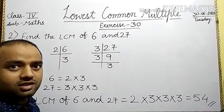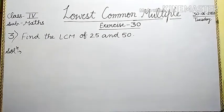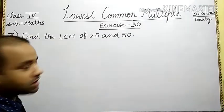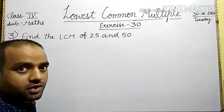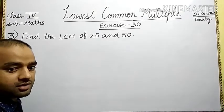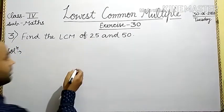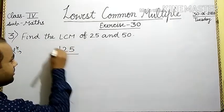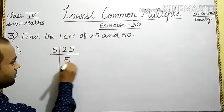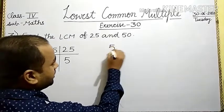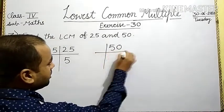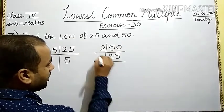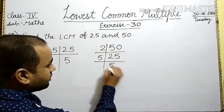Now, let us discuss question number 3. In question number 3, find the LCM of 25 and 50. First, we find the prime factors of 25 and 50. For 25: 5 times 5 gives 25. Next, 50: divide by smallest prime number 2 — 2 into 25 is 50. And next, 5 times 5 gives 25.